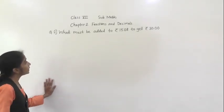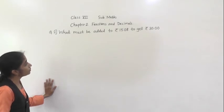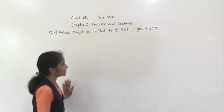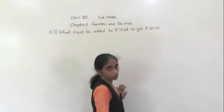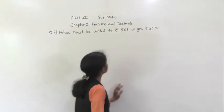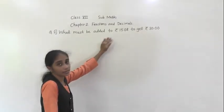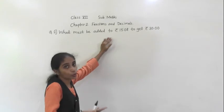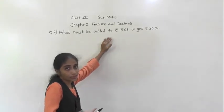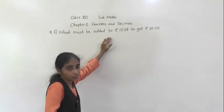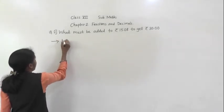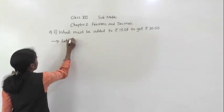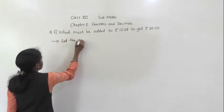Let's solve question number 2. What must be added to rupees 15 and 8.56 to get rupees 30? What must be added? We don't know, so let that number be X.